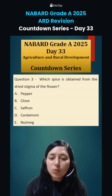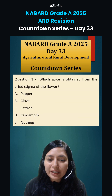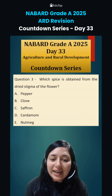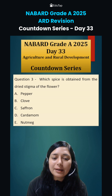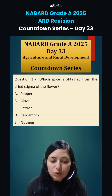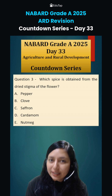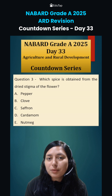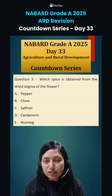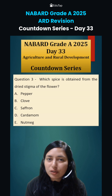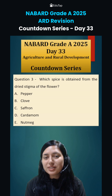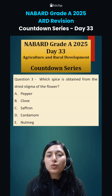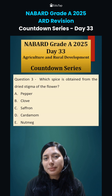Third question: which spice is obtained from the dried stigma of a flower? Very important. Your options are: pepper, clove, saffron, cardamom, or nutmeg. These questions are from your plantation and horticulture crop chapter, which is one of the important chapters. Students, carefully read these questions and options and please do let me know the answers in the comment section.